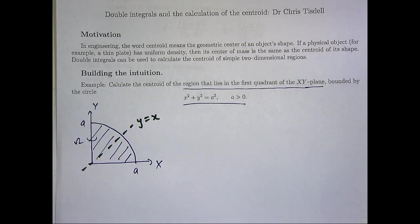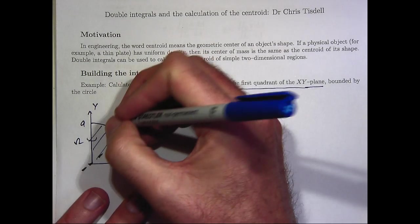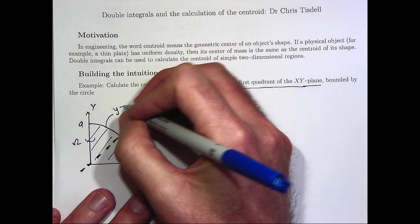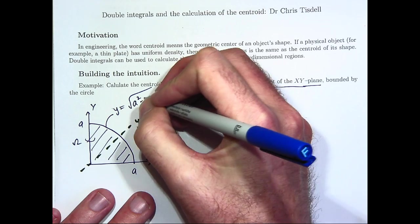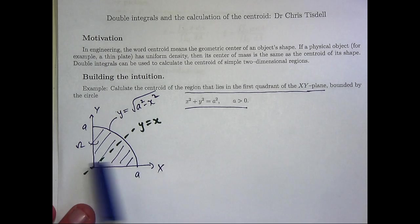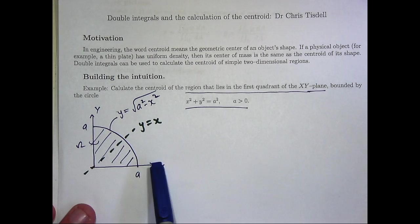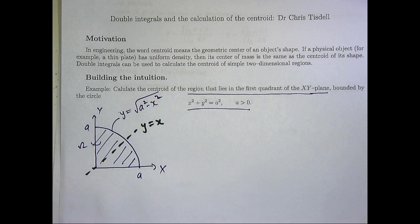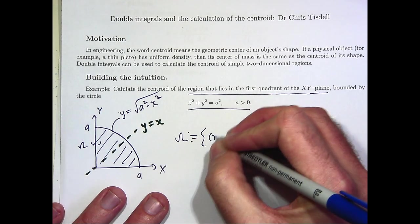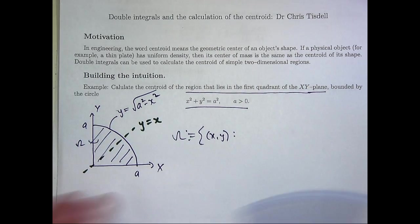Now to set up the double integral, I'm going to label the bounding curves. So this curve here is the following. Another bounding curve is the x-axis, that's the line y equals 0. And this is another bounding curve, the y-axis, that's just the curve x equals 0. So let's describe omega in terms of those bounding functions.